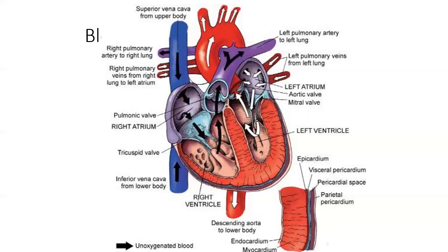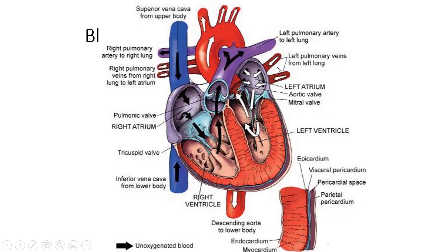Let's look at the blood flow. The superior vena cava drains the blood from the upper body — the head, neck, and shoulder — and the inferior vena cava drains the blood from the lower body. Both dump it into the right atrium. It then goes through the tricuspid valve into the right ventricle. The right ventricle contracts and pushes the blood through the pulmonic valve into the pulmonary artery — one to the left lung, one to the right lung — where we breathe off carbon dioxide and pick up oxygen.